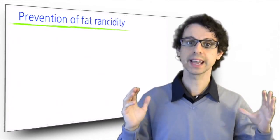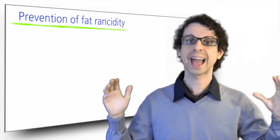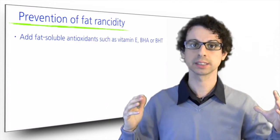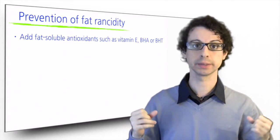As far as the polyunsaturated fats we eat, we have to take great care in preventing their oxidation. The food industry does that by adding fat-soluble antioxidants, such as vitamin E, or the artificial ones such as BHA and BHT.